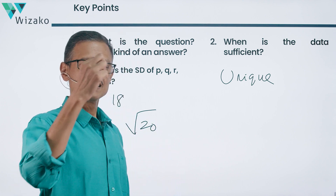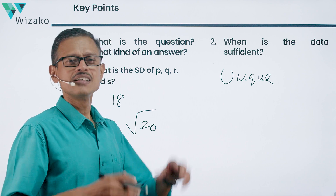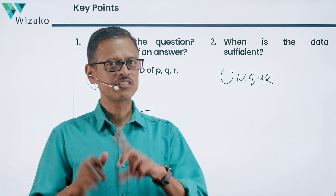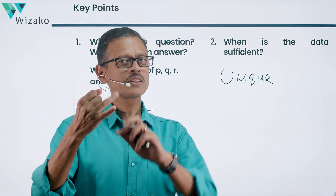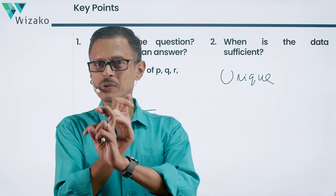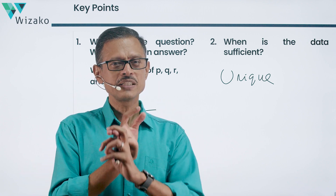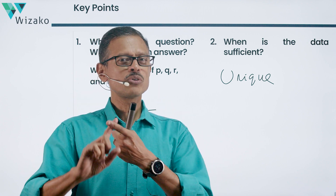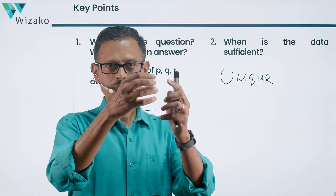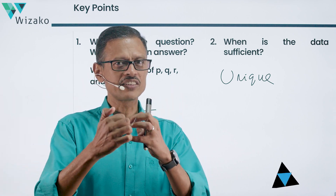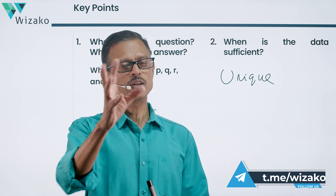Let's spend a minute recapping the formula to compute standard deviation. There are a couple of ways. The first method: step one, find the mean; step two, compute the deviations by subtracting the mean from each term; step three, square the deviations; step four, compute the variance, which is the average of the squared deviations. Standard deviation is the square root of that variance.